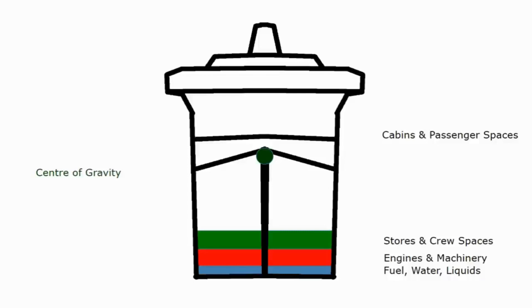Looking at the picture, however, we can see the engines, machinery, fuel stores, and all that sort of thing weigh an awful lot more than the cabins and passenger spaces — things like theaters which are mainly just air. This has the effect of dragging the center of gravity downwards, so we know the center of gravity will be towards the bottom half of the ship.